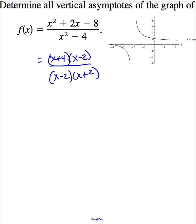Now, what happens to these two x minus 2s? They're going to go away. So, I can rewrite this as x plus 4 divided by x plus 2. So, I'm going to have a vertical asymptote at x equal negative 2.